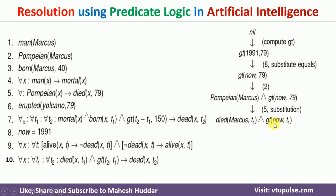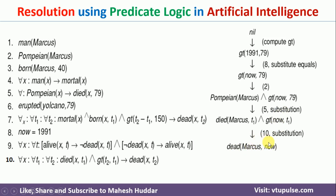Now, this particular statement says marcus died at time t1, and 'now' is greater than t1. The meaning is: because he died at time t1 and the current time is greater than t1, this person is dead at the current time. So we can write dead(marcus, now). Using the ninth proposition, if he is dead at this point in time, he is not alive — so we write not alive(marcus, now).